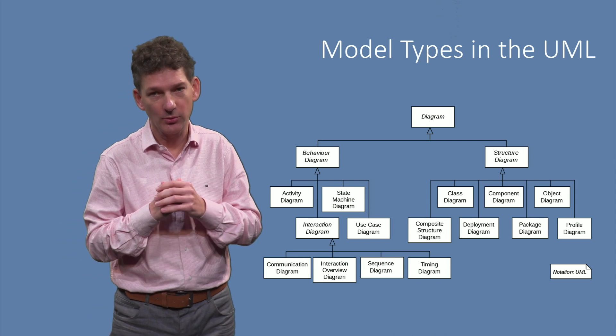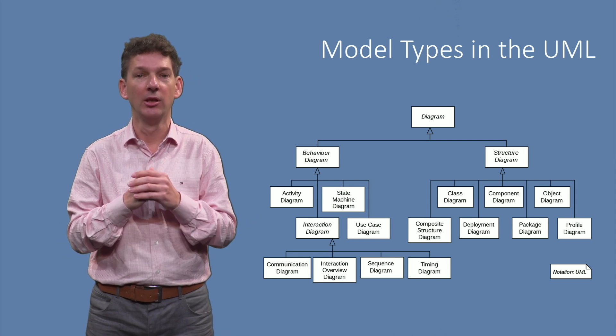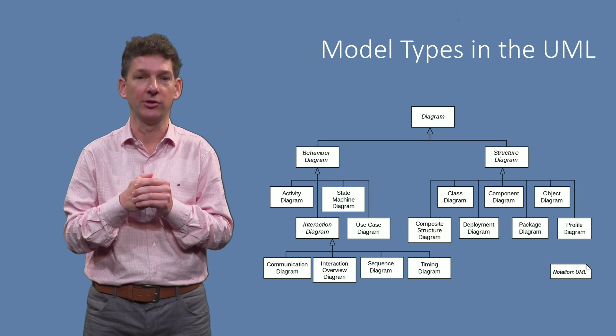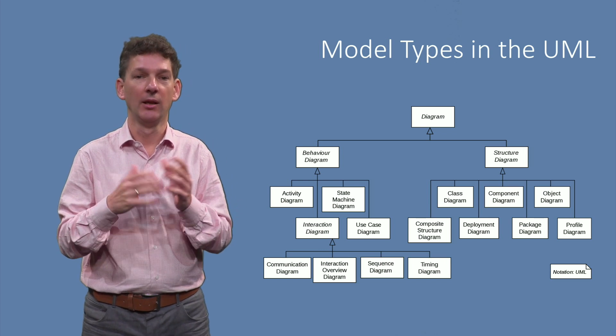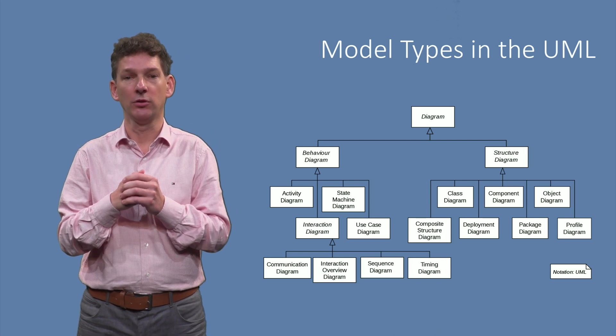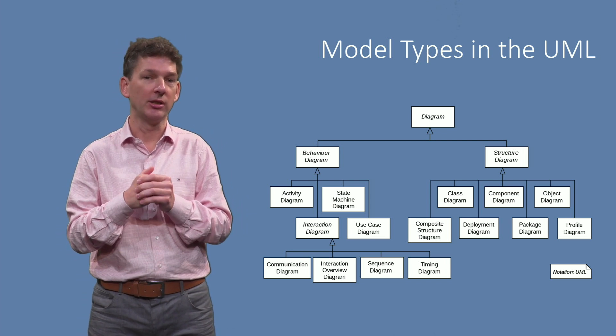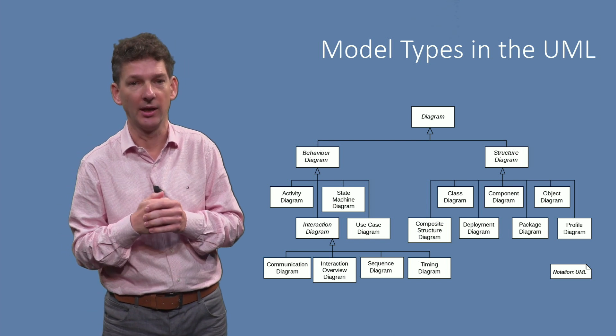For testing purposes, we are mostly interested in models of the behavior of software systems, that is, of the dynamic characteristics. In the UML, examples of such behavioral models include state machine diagrams and activity diagrams.